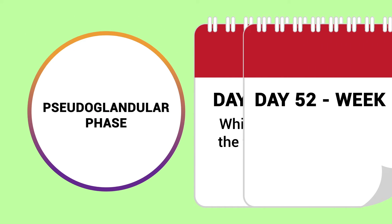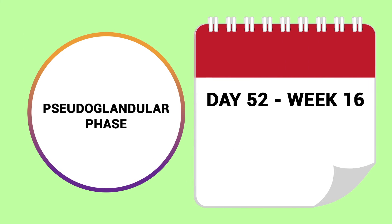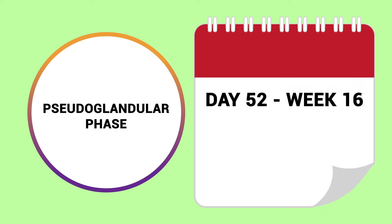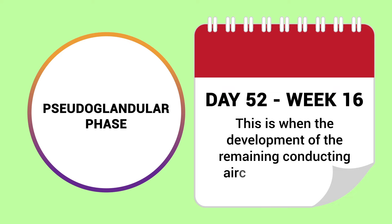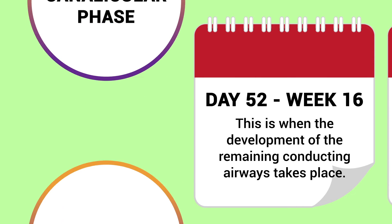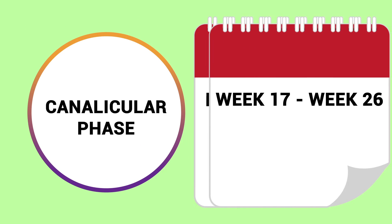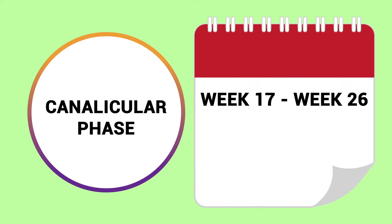Then there is the pseudoglandular phase. This phase occurs from approximately day 52 to week 16 of gestation. This is when the development of the remaining conducting airways takes place.